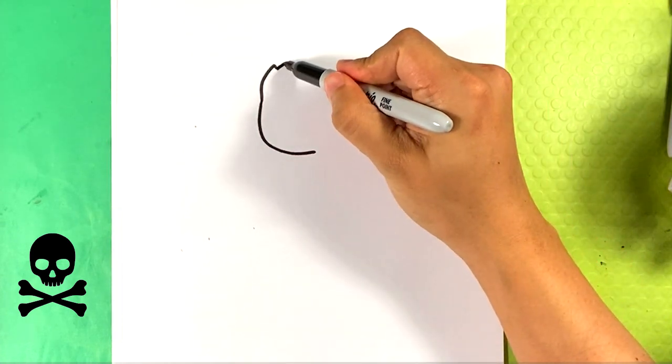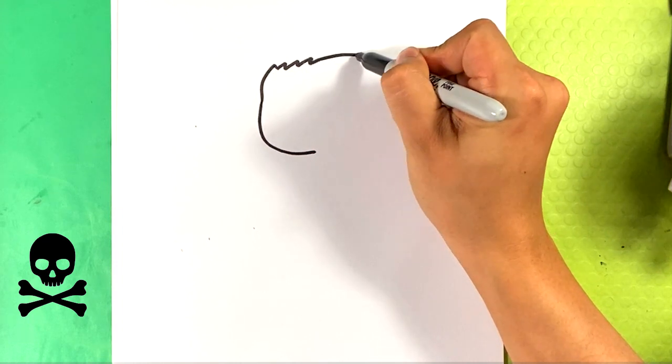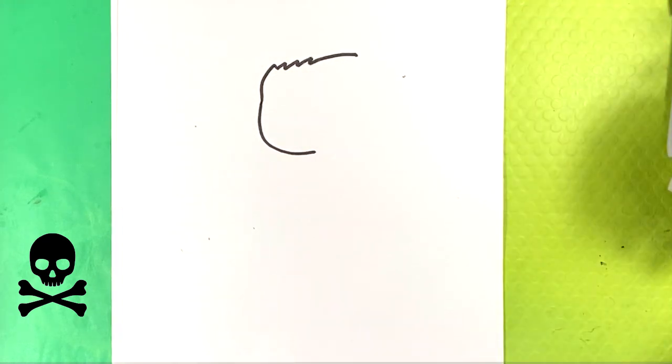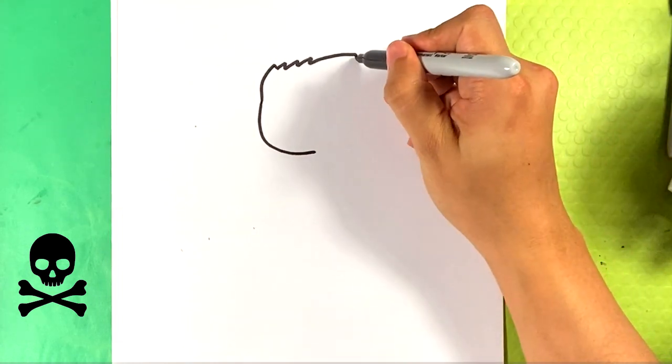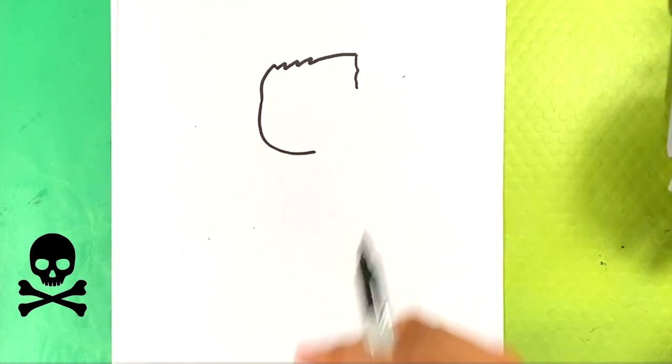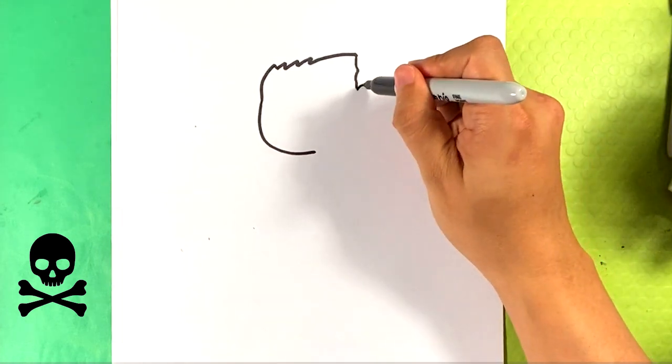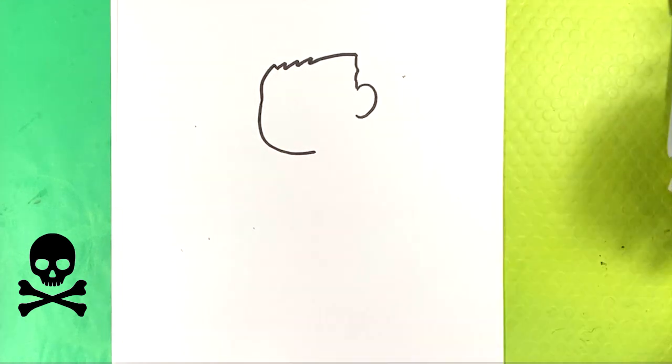Down right here. Zigzag right there for the hair. Line over here for the hairline. Curve over here for the ear.